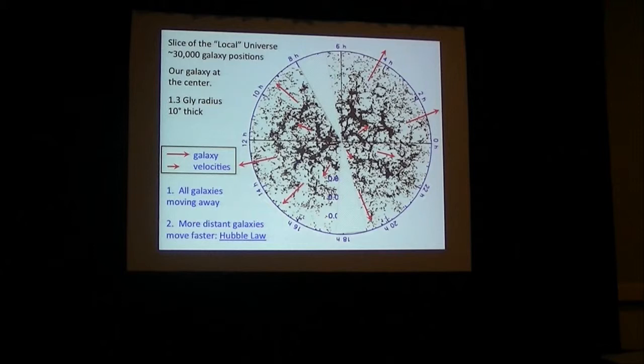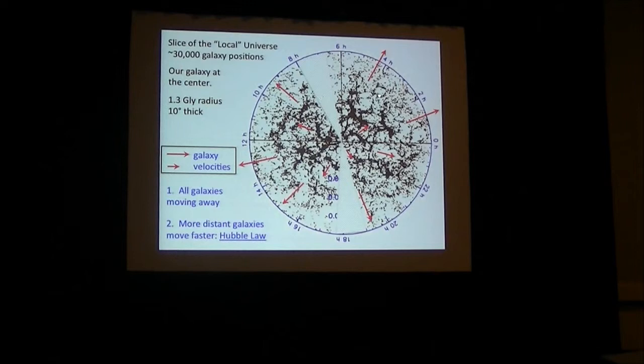Before we conclude that everything is going away from us, let's ask a simple question — one we should always ask in any context: what is the experience of someone else? What does some other galaxy within this velocity field witness? If we jump to this galaxy here, and it had a sentient civilization measuring velocities of other galaxies, what would it see? This is actually a lovely example of a quick vector addition problem that you can set even in high school.